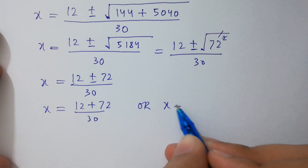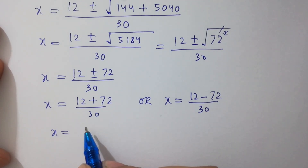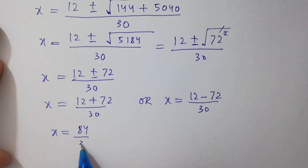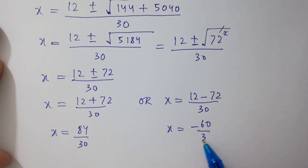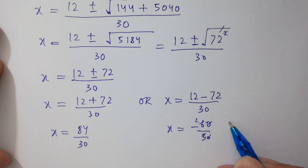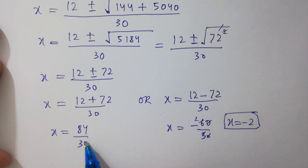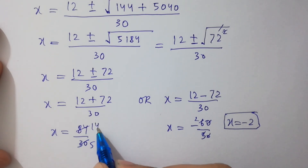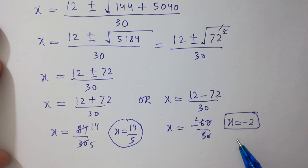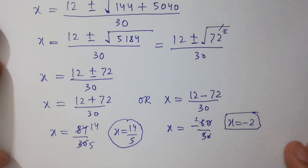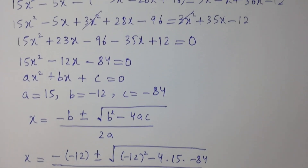So x equals 12 plus or minus 72, over 30. First solution: x equals (12 plus 72) over 30 equals 84 over 30 equals 14 over 5. Second solution: x equals (12 minus 72) over 30 equals minus 60 over 30 equals minus 2. So x has two solutions: minus 2 and 14 over 5. Thanks for watching this video, please subscribe to this channel to get notifications of my new videos. Bye.